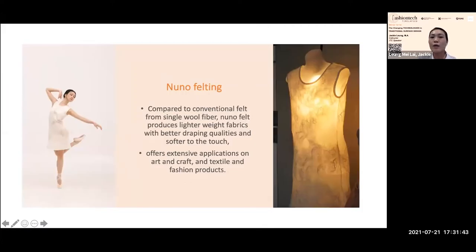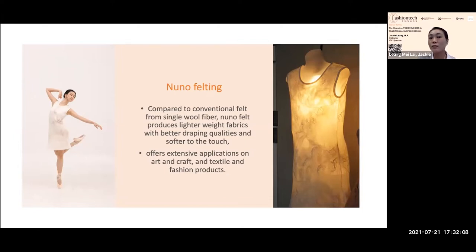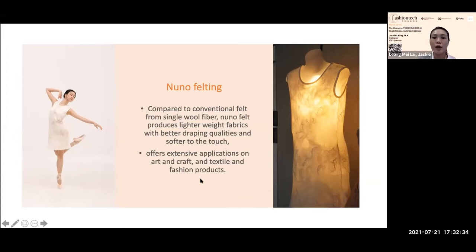I want to share another piece of my work showcased in this exhibition — made with nuno felting using merino wool and silk on silk tulle. Silk tulle is a very lightweight net-like fabric. I deliberately left some spaces without felting to show the body texture and skin color. This method creates very lightweight and drapey fabric — unlike wet felting which can produce quite heavy fabric, nuno felting gives new texture and hand feel.